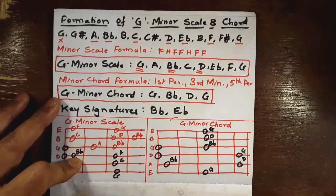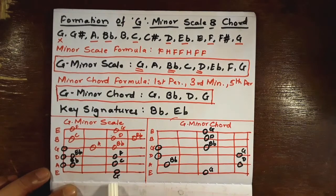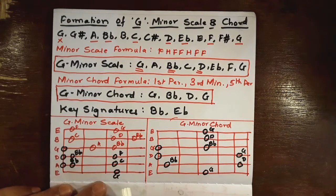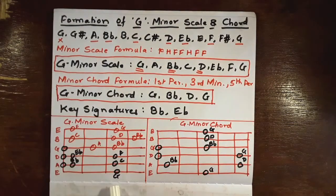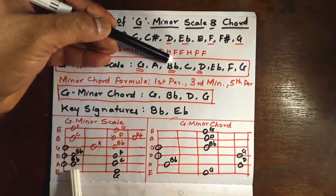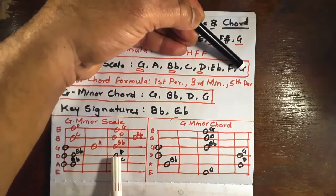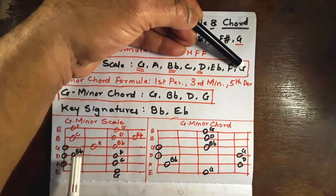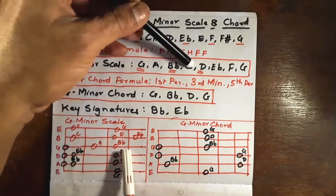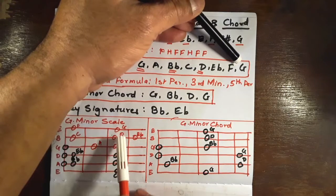Let's check out the G minor scale on the fret diagram. I've used black pen for the first octave and red pen for the second octave. We start with G, then A, then B flat, C, D, E flat, F, and G. From here to here we have the first octave.